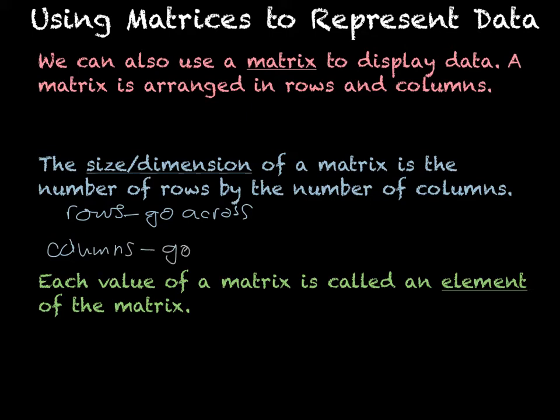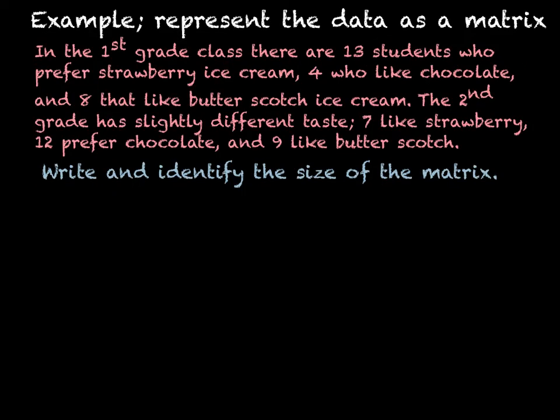So we would write it as rows by columns. Rows go across and columns go down. Each value of a matrix is called an element of the matrix. So if I'm asking you to identify a certain element, then you're just going to give me one number in the matrix.